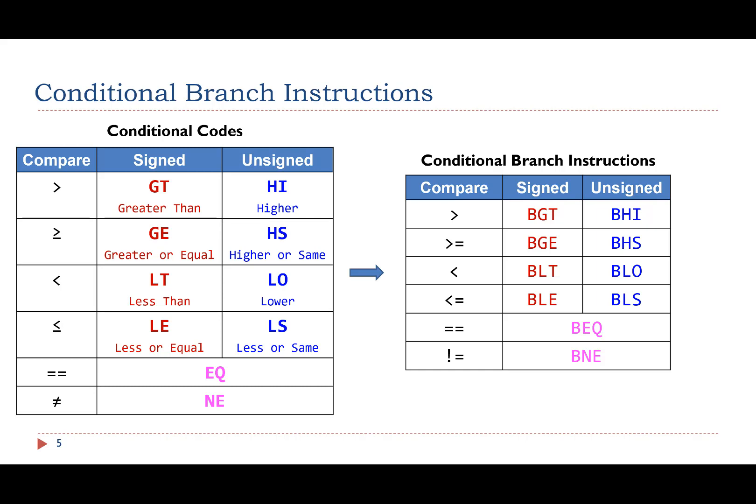For example, BGT is branch if signed greater than, BHI is branch if unsigned greater than.